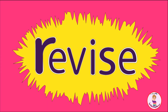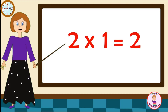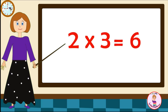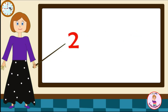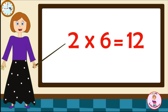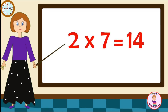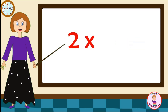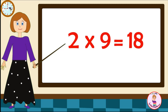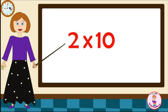Let's revise it one more time. Come on! Two-one's are two. Two-two's are four. Two-three's are six. Two-four's are eight. Two-five's are ten. Two-six's are twelve. Two-seven's are fourteen. Two-eight's are sixteen. Two-nine's are eighteen. Two-ten's are twenty.